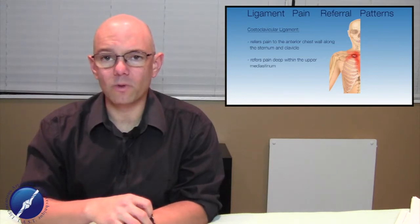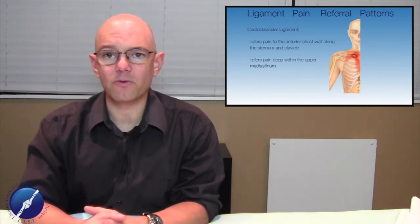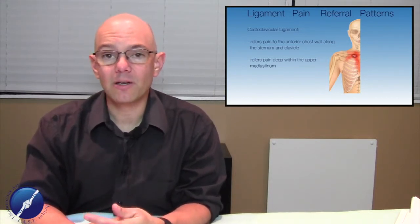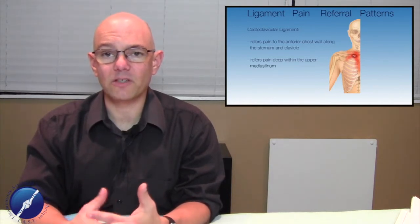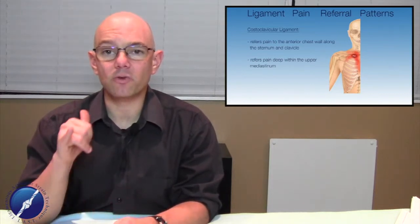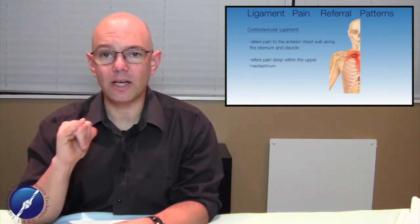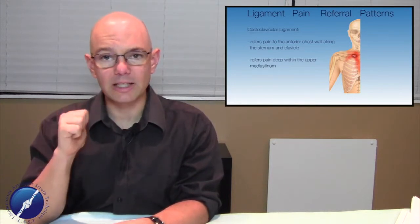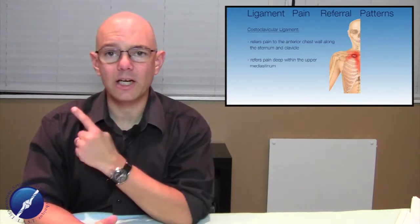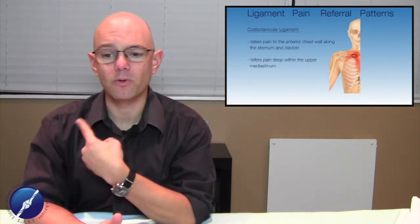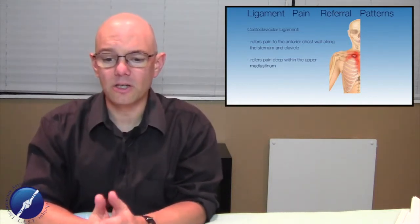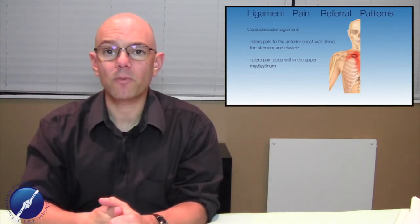They typically say, at least with my patients, that these costoclavicular ligament pain referral patterns are very deep within the thorax. It feels like it's lung, it feels like it's mediastinum. Sometimes they'll actually feel it go through and through. They'll feel it through the anterior aspect, feel it directly into that T1 costotransverse joint capsule tissue also. It's not a radiating pain where it goes around from the anterior to the posterior aspect—it goes through and through, from one all the way through to the other. Keep a lookout for those pain referral patterns with your patients.